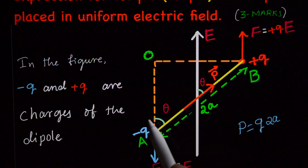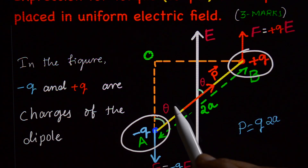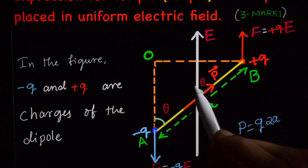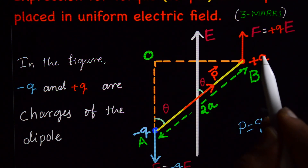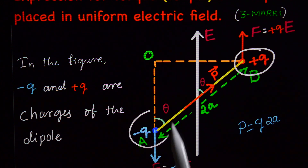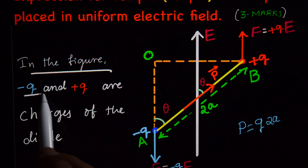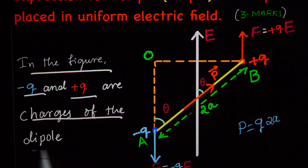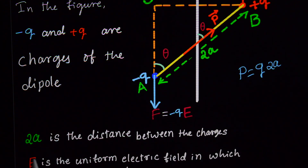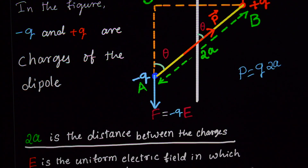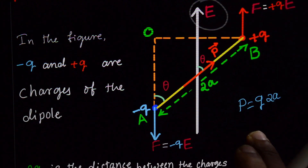A dipole is a system of two charges equal in magnitude but opposite in sign, separated by a small distance. That is called a dipole. In this figure, minus Q and plus Q are the charges of the dipole, and the distance between them is 2A.